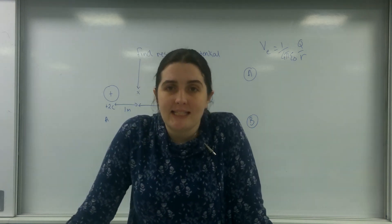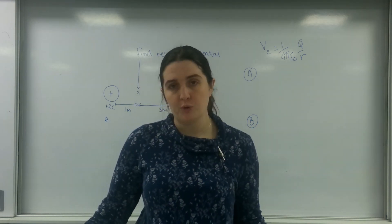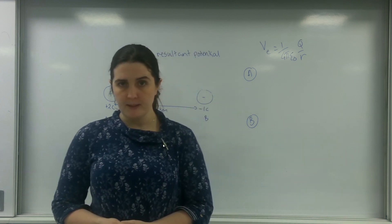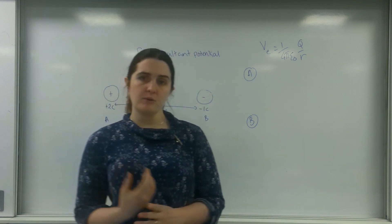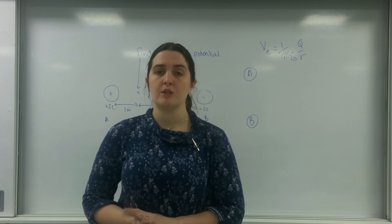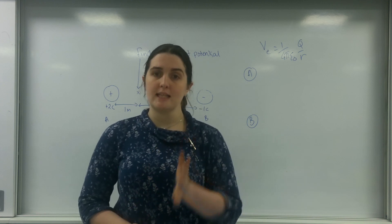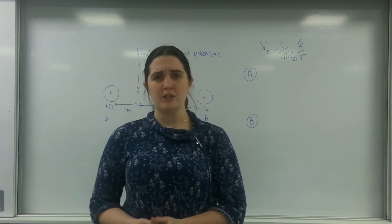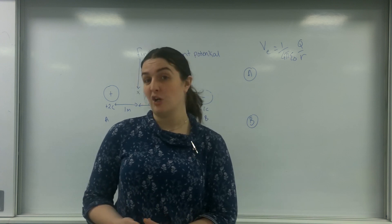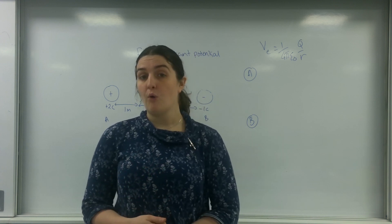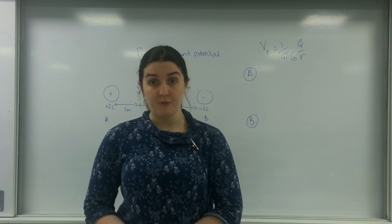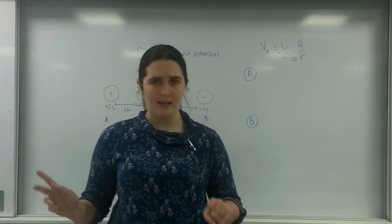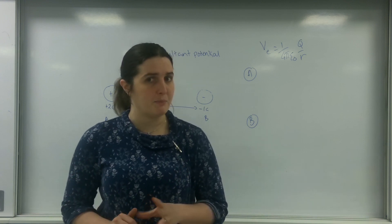Hello and welcome to TL Physics. Today I'm going to talk about finding the resultant potential at a point. To find the resultant potential, it's really important to understand that potential is a scalar quantity — it's not a vector. Potential tells us how much energy per unit charge we have to give, or the field gives to us, to leave the field. It doesn't have a direction — no north, south, east, west. That's why it's a scalar quantity; it gives us a magnitude.